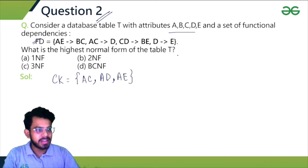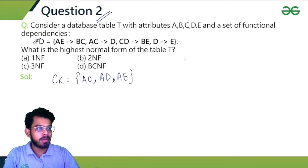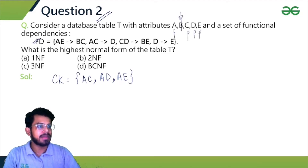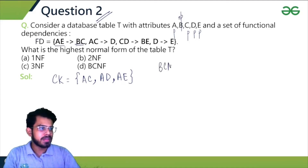From the candidate keys we can identify prime and non-prime attributes. Except B, all attributes are prime. So B is the only non-prime attribute, and A, C, D, and E are all prime attributes.